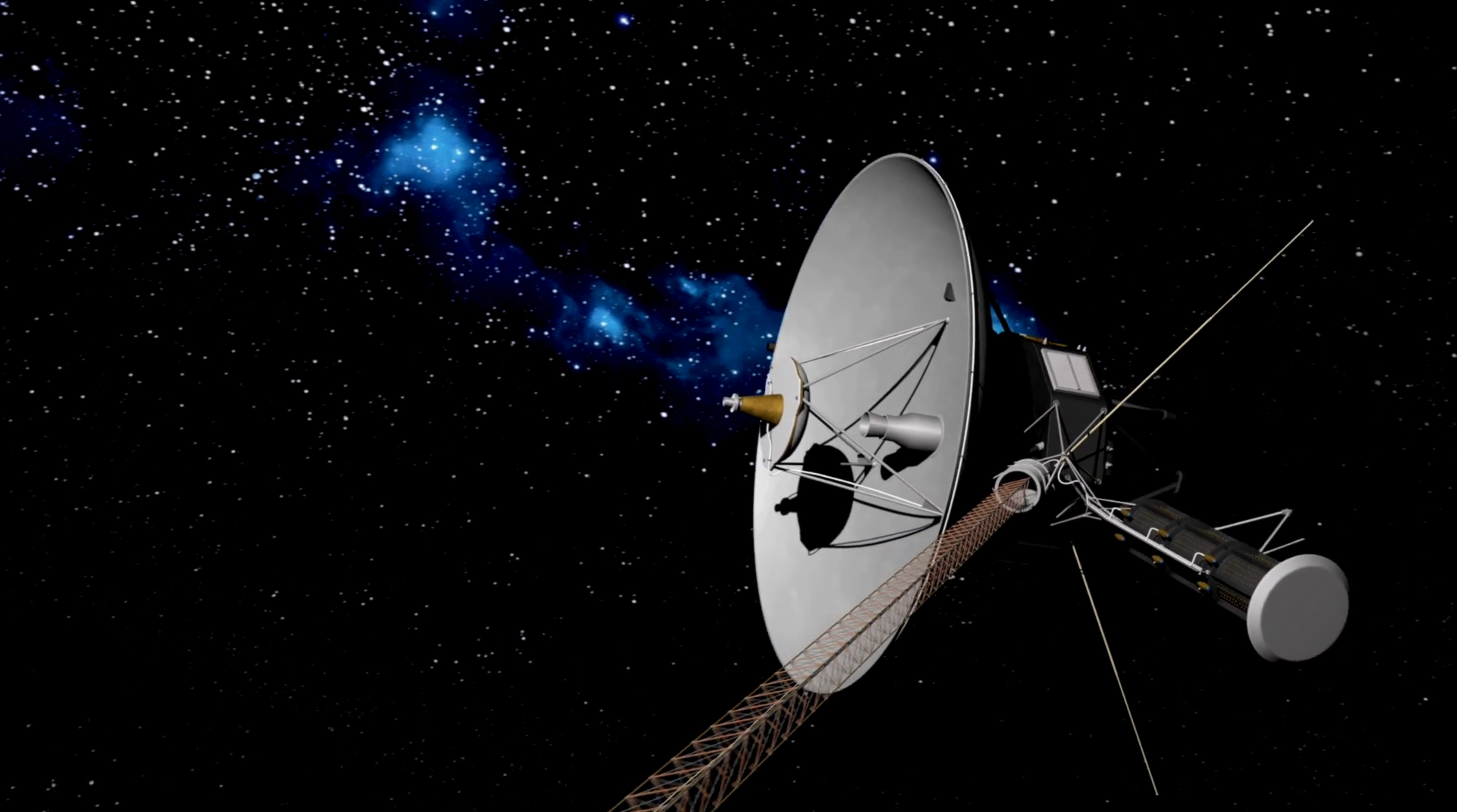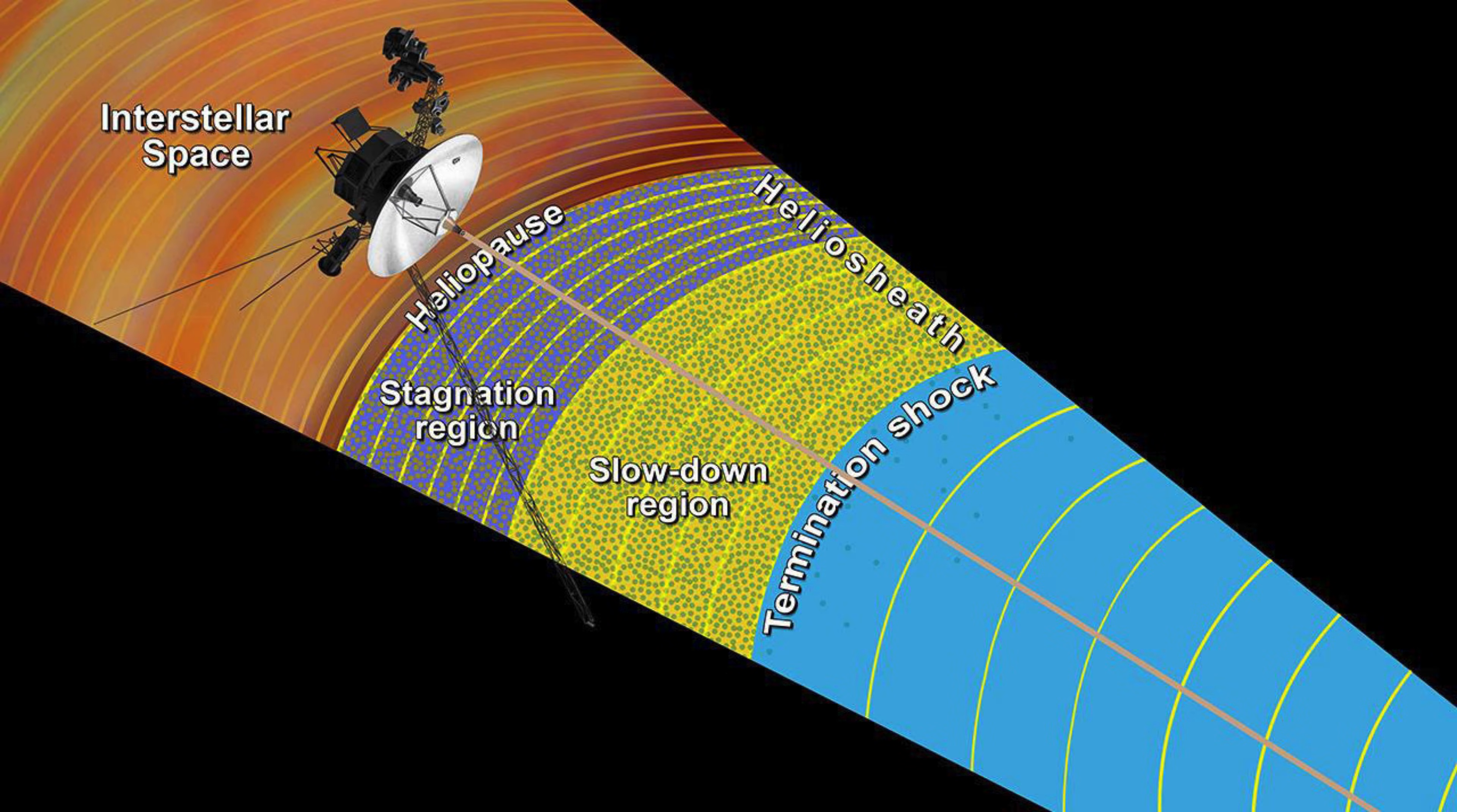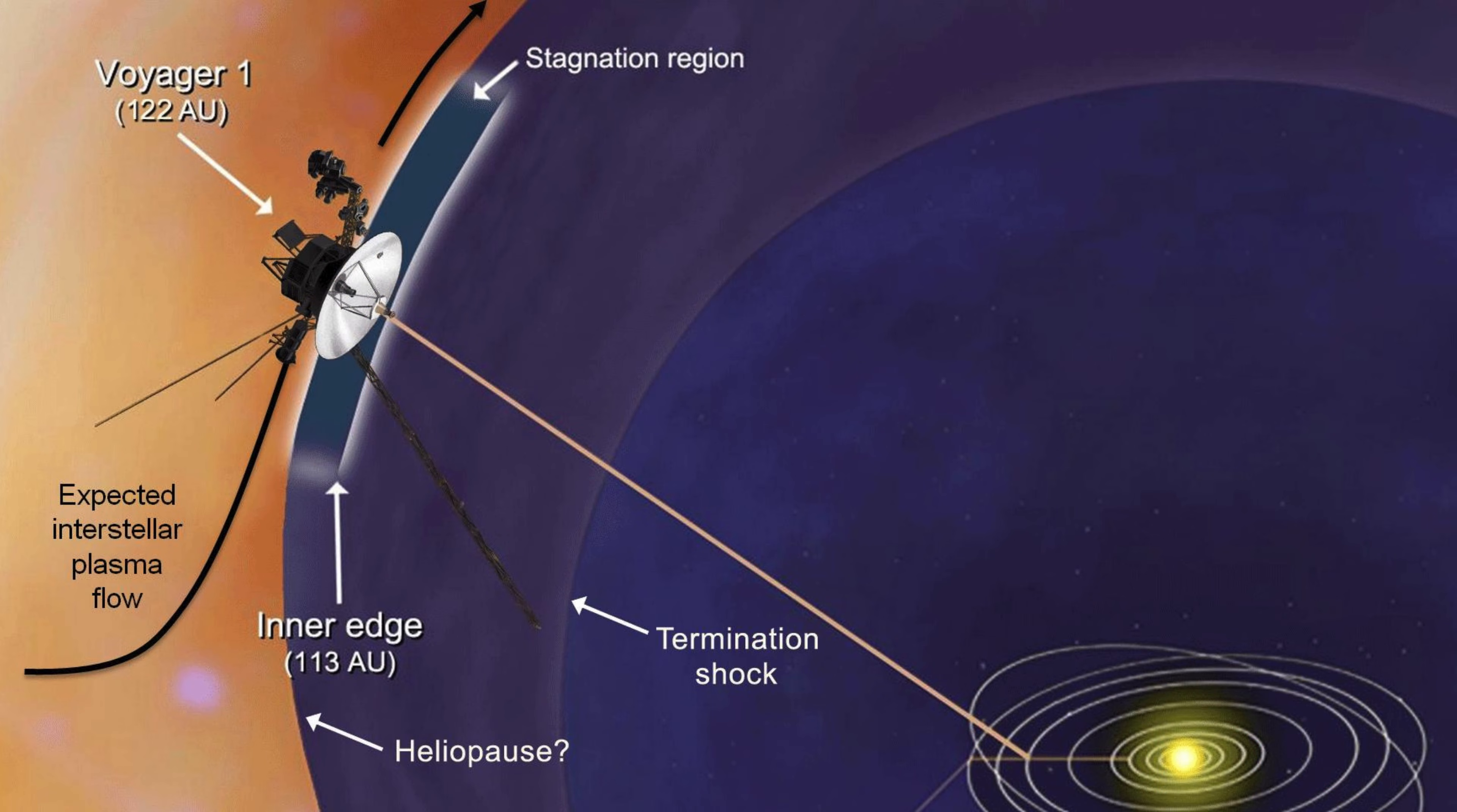On August 25, 2012, Voyager 1 flew beyond the heliopause and entered interstellar space, making it the first human-made object to do so. At the time, it was at a distance of about 122 AU, or about 11 billion miles from the sun.